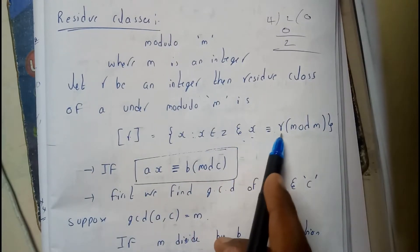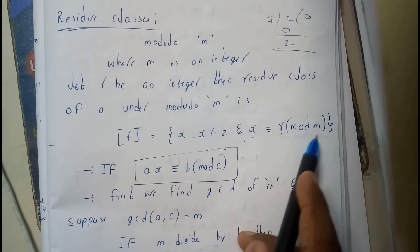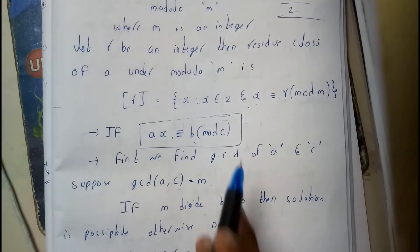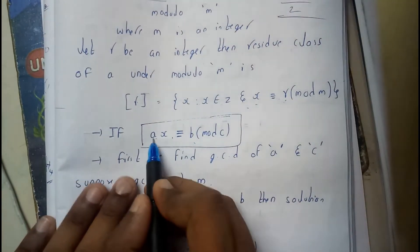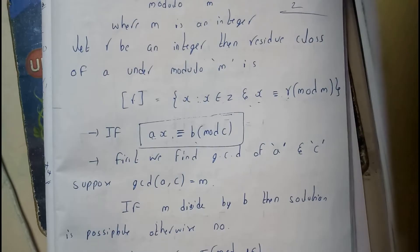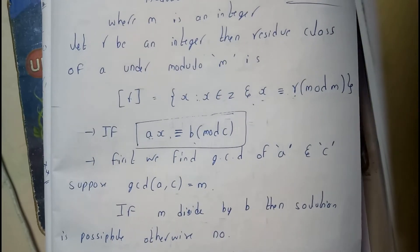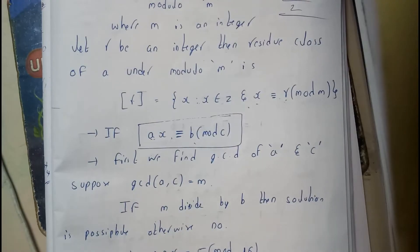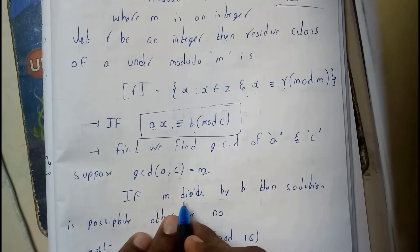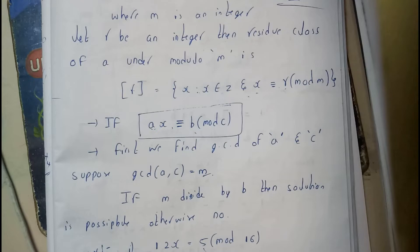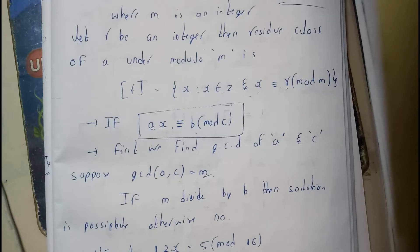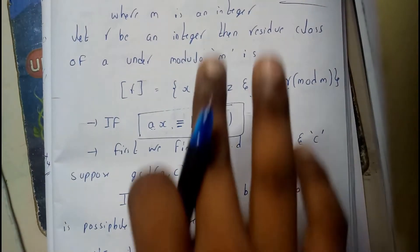Okay, if it is written in terms of ax equality b mod c, then initially we'll be finding the GCD of a comma c. I think everyone is good at GCD. Later on don't worry, I'll be explaining GCD even in the easiest way. The value of the GCD, that is greatest common divisor, is m. If m divided by b, then solution is possible, otherwise there is no possibility of any solution.